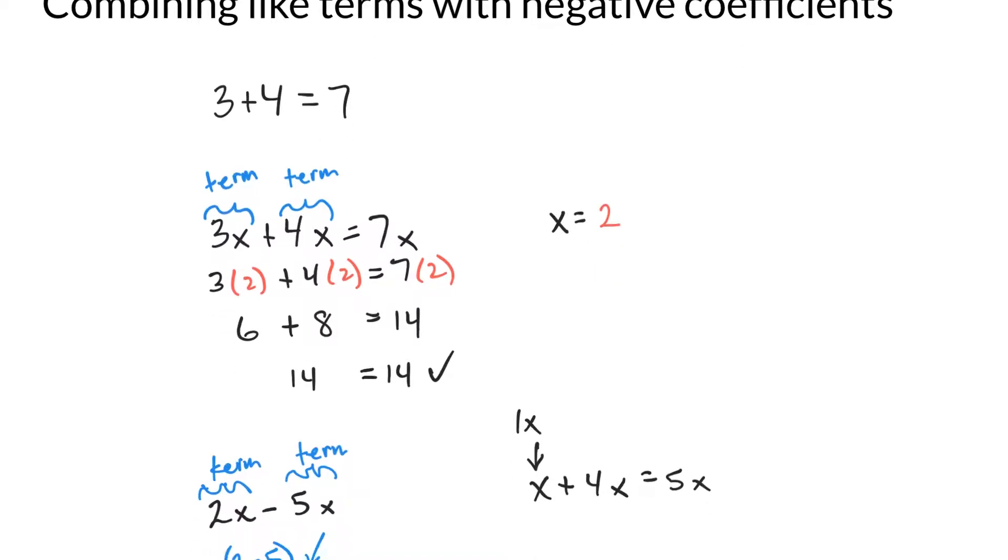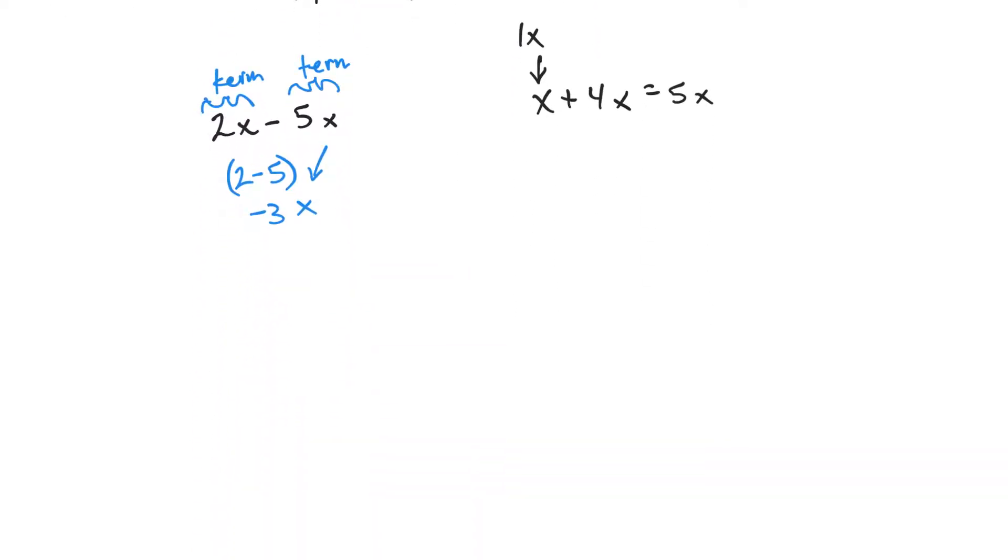And let me show an example of something that would not be like terms. Like, if I had, let's say, 3x plus 2 plus 8y plus 5x. Now, the like terms would only be the variables right here.